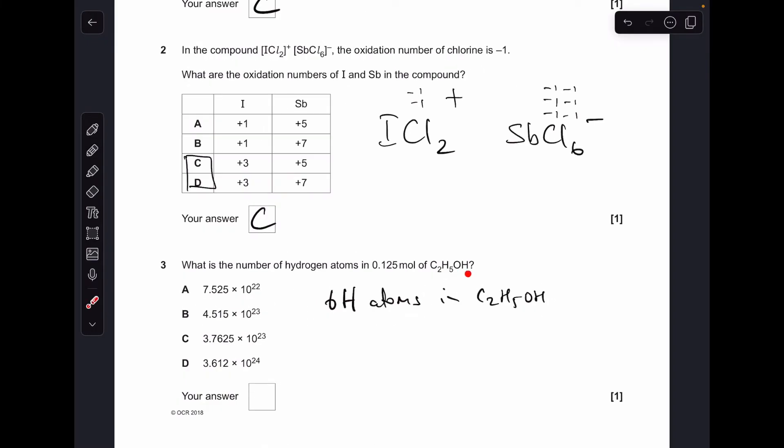Moving on to number 3, so in an ethanol molecule, you've got 6 hydrogen atoms, 5 plus that one there. So if you've got 0.125 moles of ethanol, you've got 6 times that moles of hydrogen atoms. Multiplied by Avogadro's number gives option B for your answer.